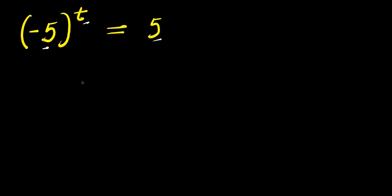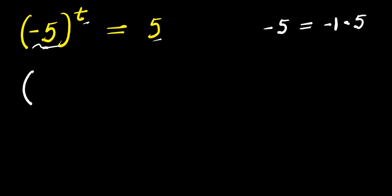We are going to make use of two different methods. So let's start with the first method. Here is negative 5. I can replace this negative 5 with negative 1 times 5. So I have it as negative 1 times 5 raised to the power of t, and this equals 5.